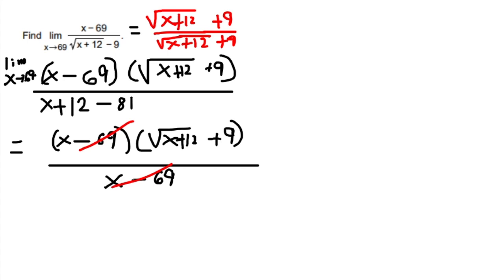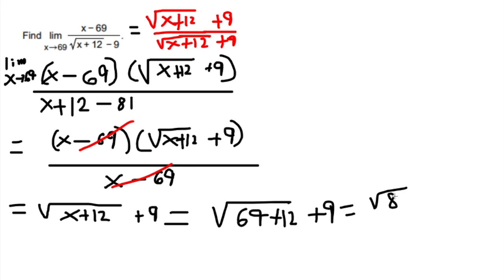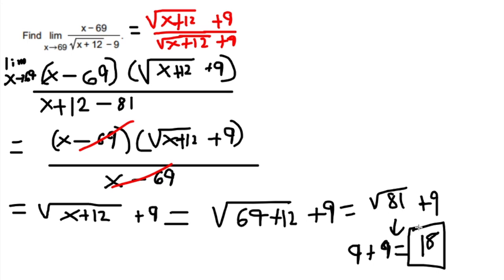We see that the (x minus 69) terms cancel. We are left with the numerator as the square root of x plus 12 plus 9. Now we plug in x equals 69: we get the square root of 81 plus 9, which is 9 plus 9, equal to 18. So as we approach 69 on the x-axis, our y value would be 18.